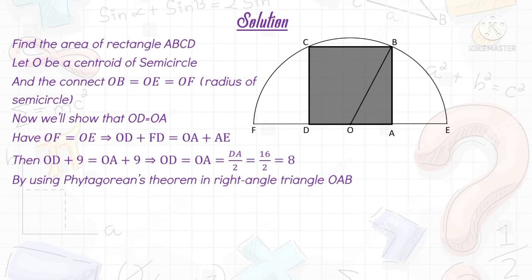By using Pythagoras' theorem in right-angled triangle OAB, we have OB² = OA² + AB². Then AB² = OB² - OA².